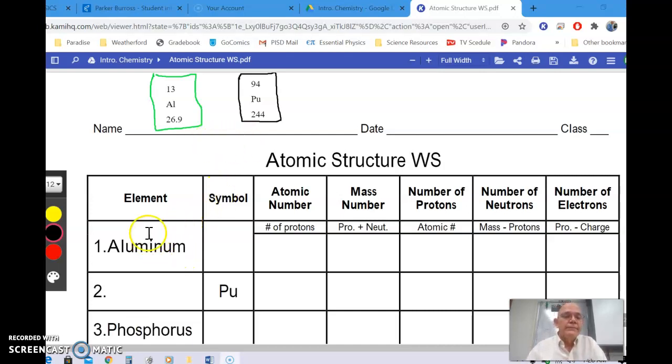So we have different elements, and we're going to give this information about it. The atomic number, the mass number, that would be the atomic mass number, but we just shortened it to mass number so it fits in there. Number of protons, number of neutrons, and number of electrons.